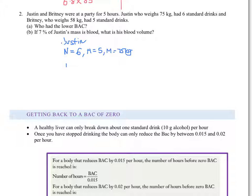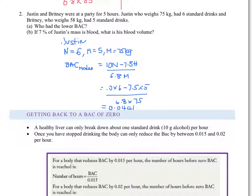We put that into our blood alcohol formula for males: 10N minus 7.5H over 6.8M. That's 10 times 6 minus 7.5 times 5, all over 6.8 times 75. That gives a blood alcohol content of 0.0441, which we'll round to 0.044. Pretty easy.